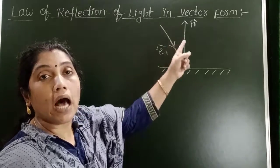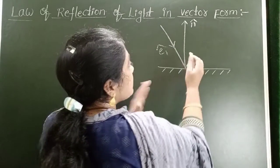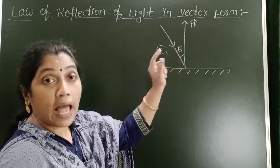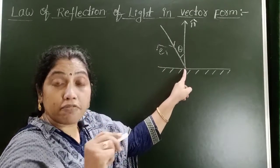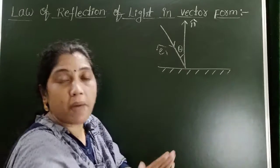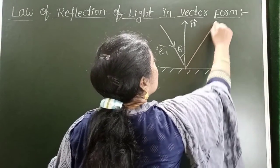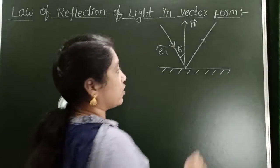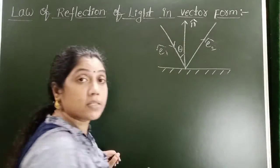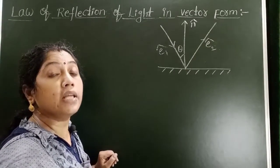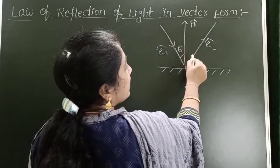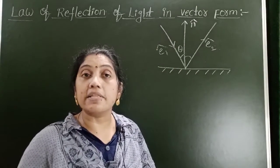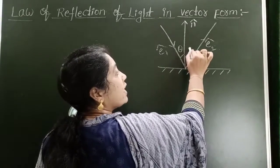E1 cap is acting in the upward direction. The incident ray makes an angle theta with the normal — this is called the angle of incidence. After touching the reflecting surface, the light ray returns back into the same medium; that light ray is called the reflected light ray. Along the direction of the reflected light ray, take another unit vector E2 cap. The reflected light ray also makes the same angle with the normal because the angle of incidence equals the angle of reflection, so here also take angle theta.